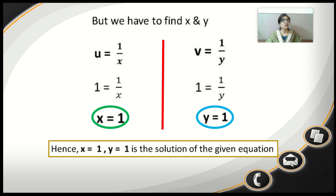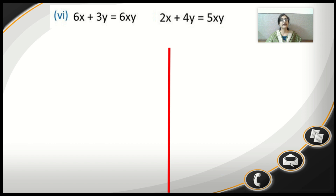The equation was quite different but we simplified it and got the values of x and y. Let's move to the next sum — this is the sixth sum from Exercise 3.6. The question gives: 6x plus 3y equals 6xy, and the second equation is 2x plus 4y equals 5xy.